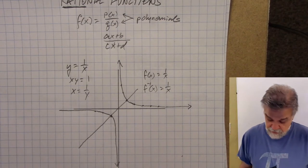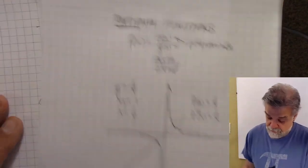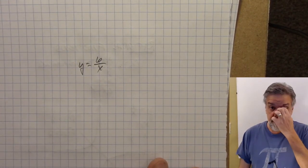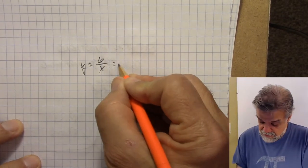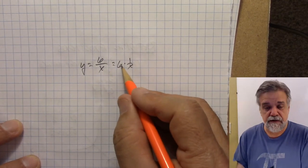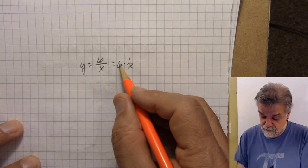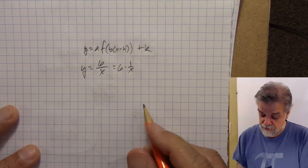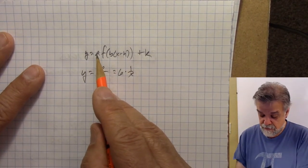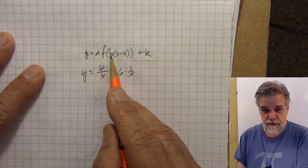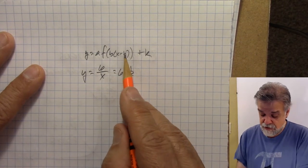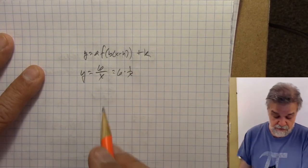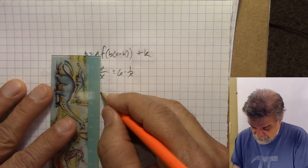Let's draw the graph of y equals 6 over x. Before I graph this, I should think: 6 over x is like 6 times 1 over x, so I'm taking the parent function and multiplying by 6. Remembering our transformations y = a·f(b(x−h)) + k, the value a creates a vertical stretch or compression. Here the 6 is A, so this creates a vertical stretch of 6.